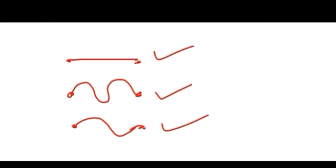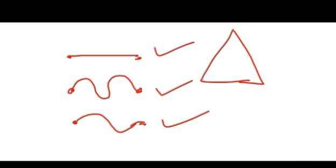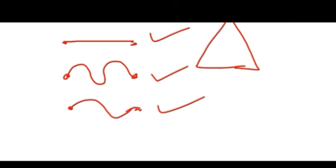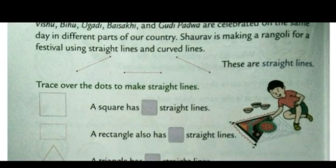I will show you some more examples. Suppose this is a shape given to you — it's a shape of a triangle. It is drawn using straight lines. Now just see this figure. It is a circle and it is drawn using a curved line. So now let's begin with the exercise given here.